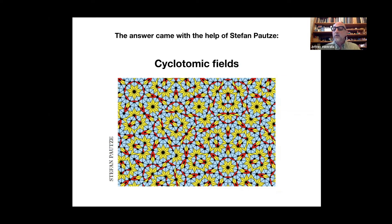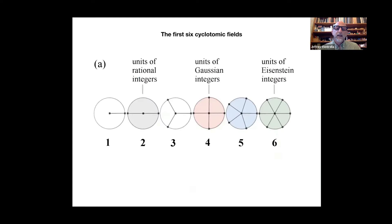So cyclotomic fields was what I learned from Stefan. And here's my illustration of cyclotomic fields. The first cyclotomic field consists of one unit, the number one. You can add or multiply any number of these units to create any positive integer. The second cyclotomic field includes negative one. So any math, including addition and multiplication of these two units results in any integer, positive or negative.